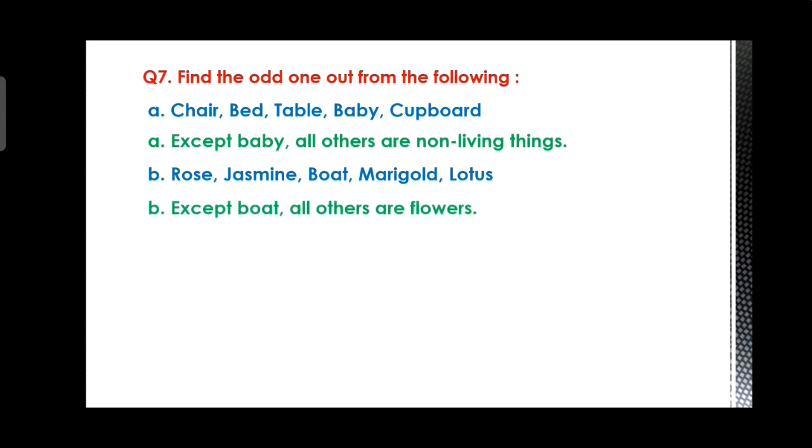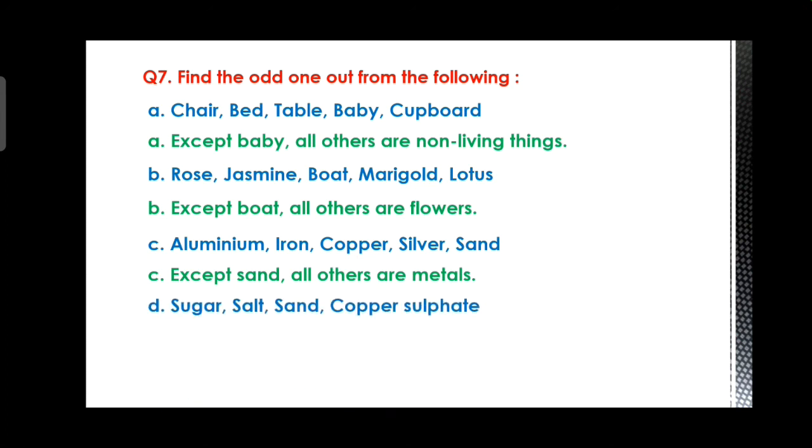Third set: aluminium, iron, copper, silver, and sand. Sand is the odd one out because all others are metals. Fourth set: sugar, salt, sand, copper sulfate. Sand is the odd one out because all others are soluble in water.